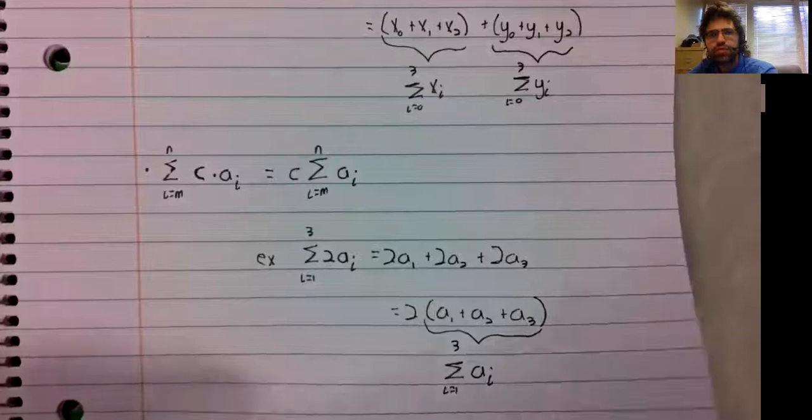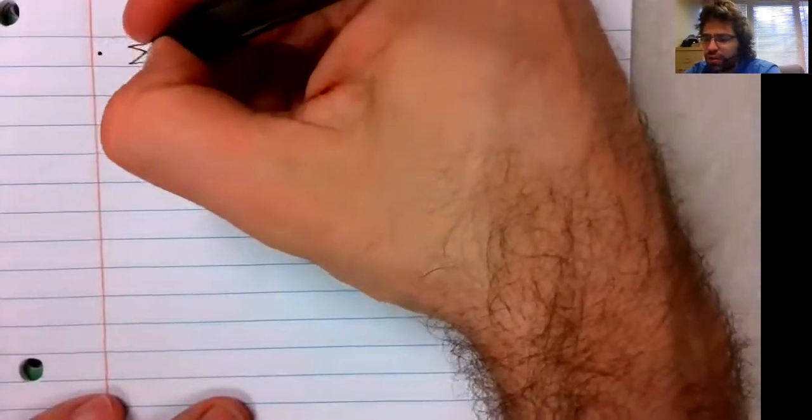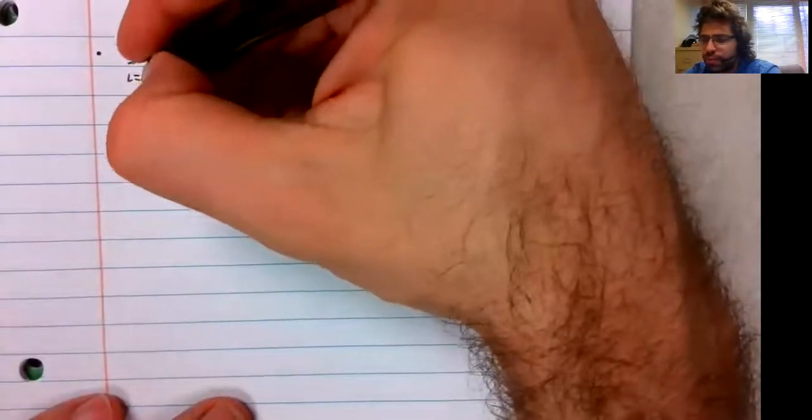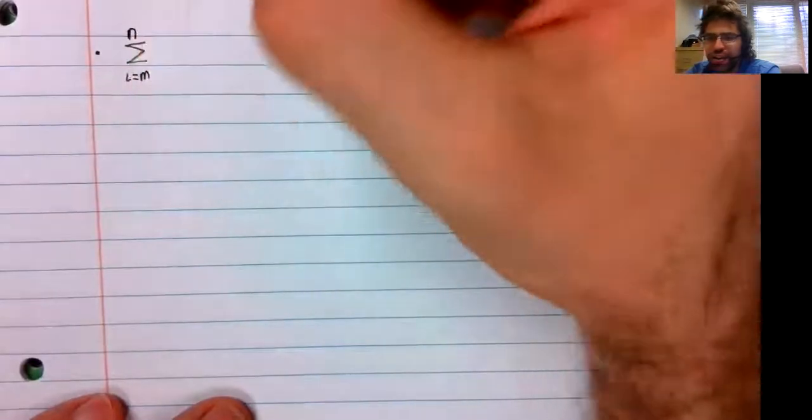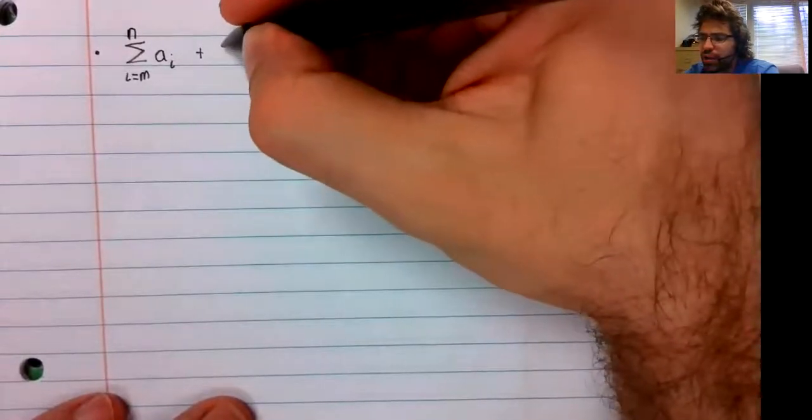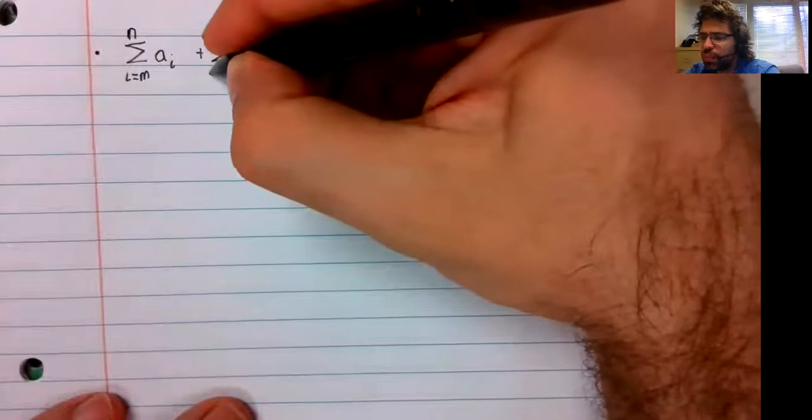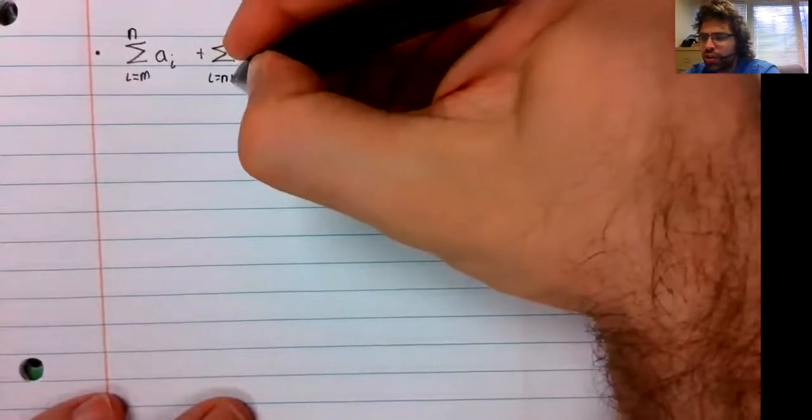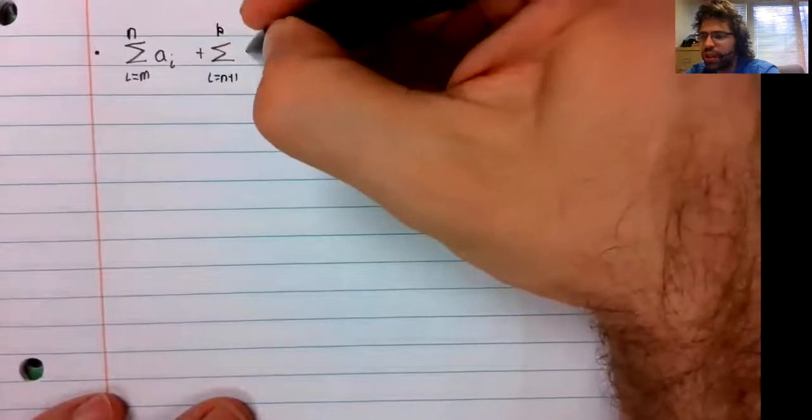The next property is also very intuitive once you get a handle on what it's actually saying. The sum from i equals m to n of a sub i plus the sum from i equals n plus one to k.